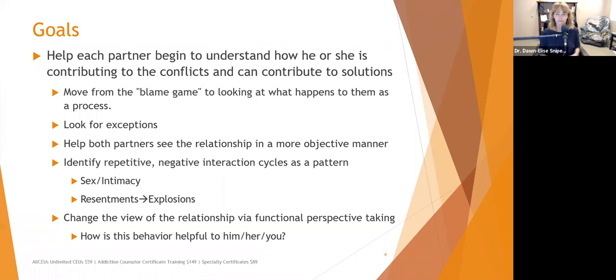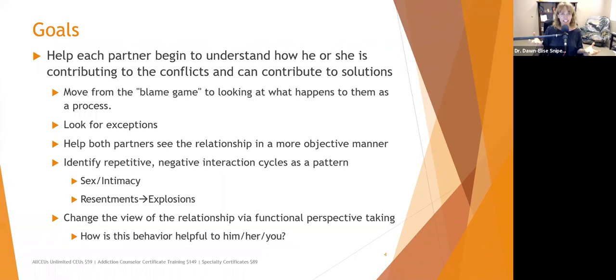We want to help both partners see the relationship in a more objective manner instead of all good or all bad, or using extreme words. Recognizing that relationships are almost never perfect — what parts of this relationship, even though some parts are really unfortunate, maybe even unbearable, are okay if not good? Let's start balancing those scales and embracing the dialectics, using radical acceptance of the fact that it's not going to be perfect and every day is not going to be wine and roses.